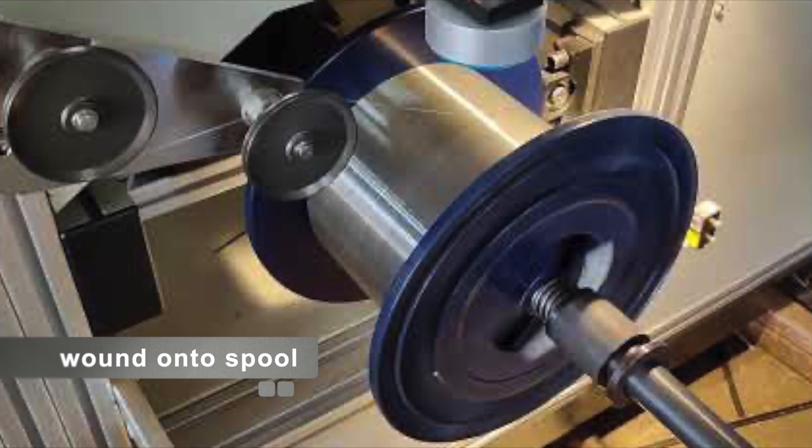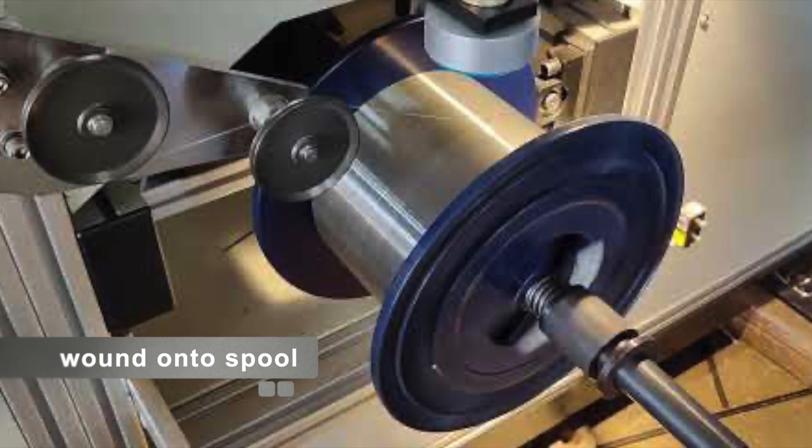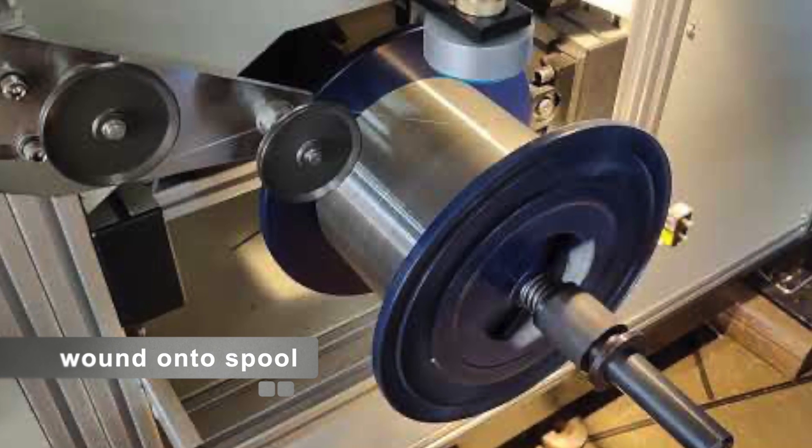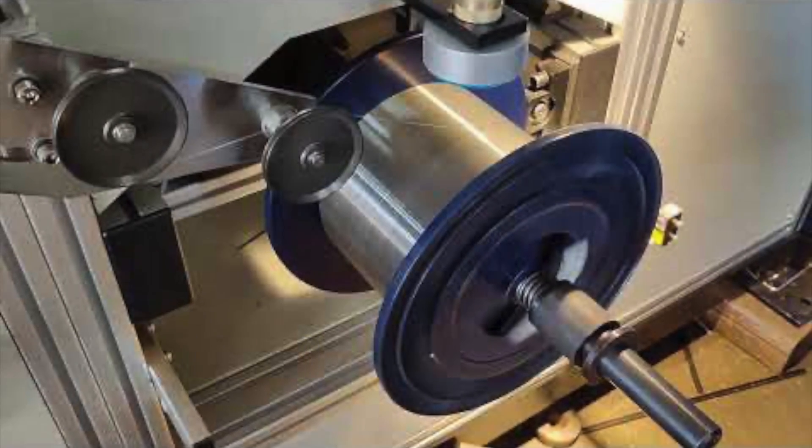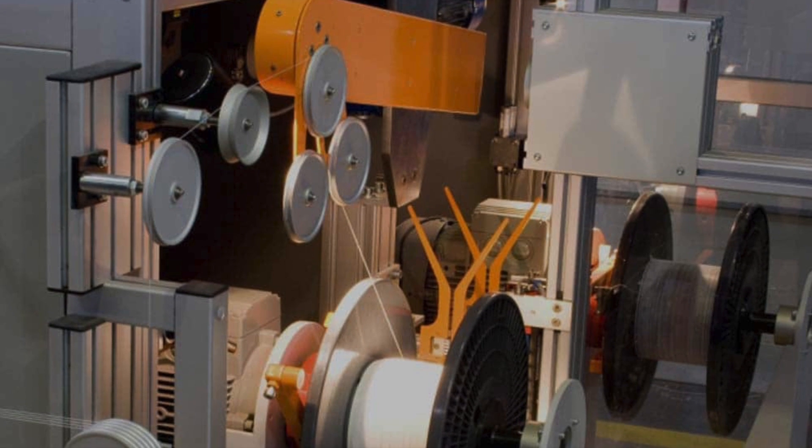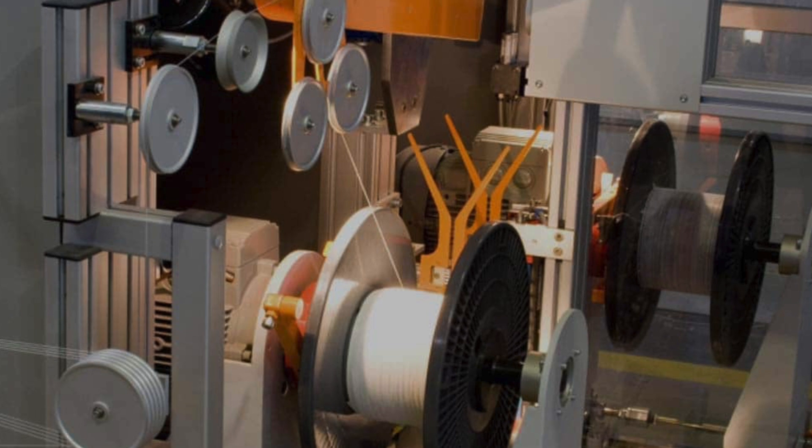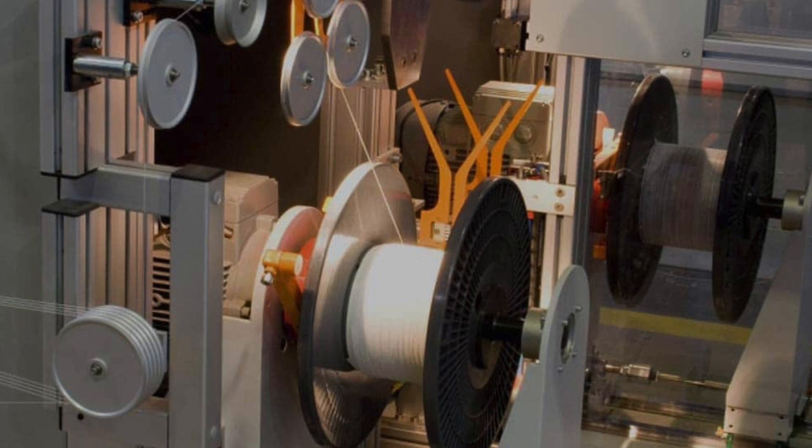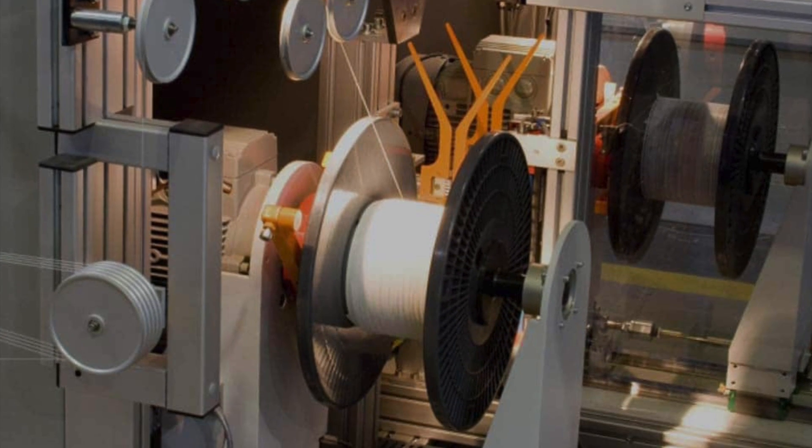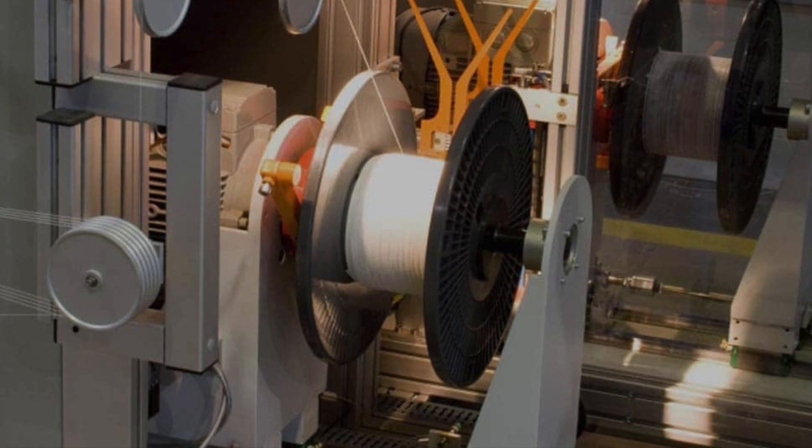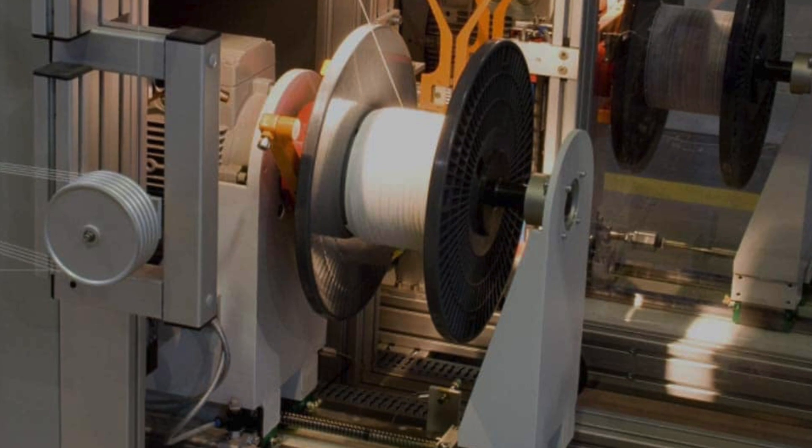The coated fiber is then wound onto large spools for testing and further processing. Rigorous testing ensures that the fiber meets all necessary specifications for strength, flexibility, and optical performance. This includes testing for tensile strength, attenuation, and the ability to transmit light over long distances without significant loss.